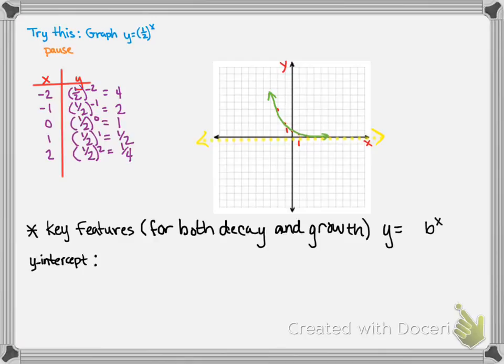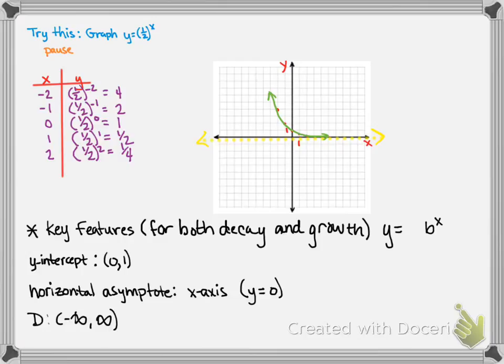Our y-intercept will be 0, 1. And our horizontal asymptote will be at the x-axis, which is the line y equals 0. The domain will be all real numbers. And the range will be positive numbers, so 0 up to infinity.